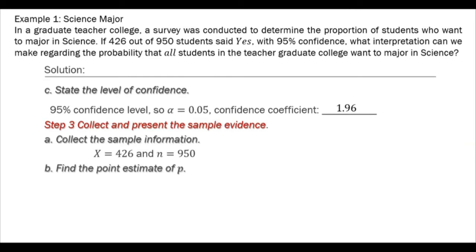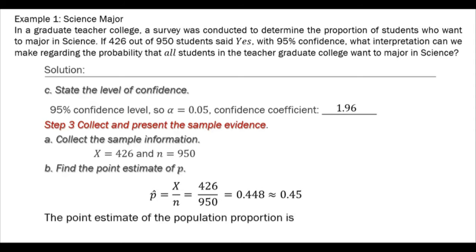Find the point estimate of p using the point estimator p hat equals x over n. So x is 426 divided by 950, then we have 0.448, and rounding off we have 0.45. The point estimate of the population proportion is 0.45 or 45%.